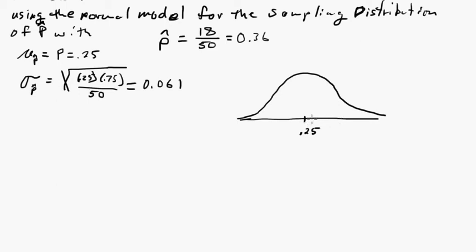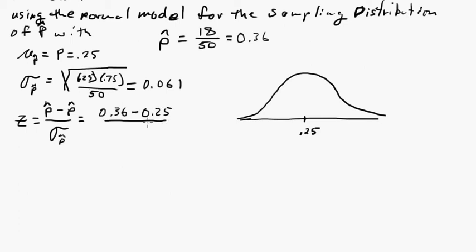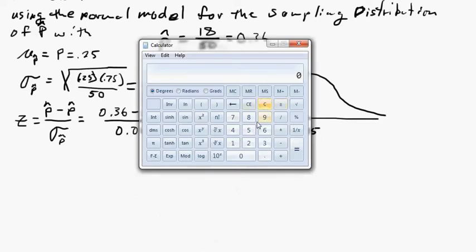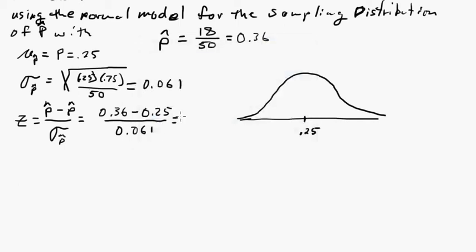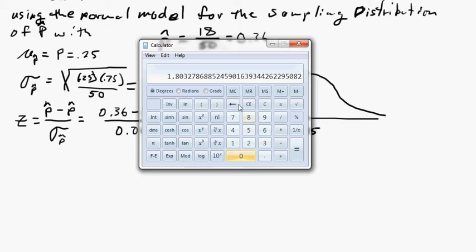The question is where 0.36 falls on the model — how far over? Our measurement is in standard deviations, so Z equals p-hat minus p (the hypothesized value), divided by the standard deviation of p-hat. That's 0.36 minus 0.25 divided by 0.061. Back to the calculator: 0.36 minus 0.25 divided by 0.061 gives approximately 1.8 standard deviations away.